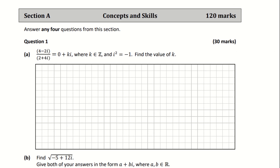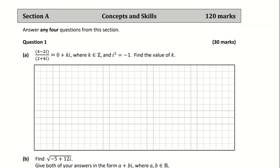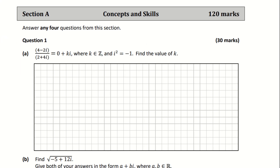There are a couple of different ways you can approach this. You can use division of complex numbers and multiply the denominator by the conjugate of the denominator. Or you can use algebraic identities, which is the method I'm going to use here. So I'm going to have 4 minus 2i all over 2 plus 4i equal to 0 plus ki.